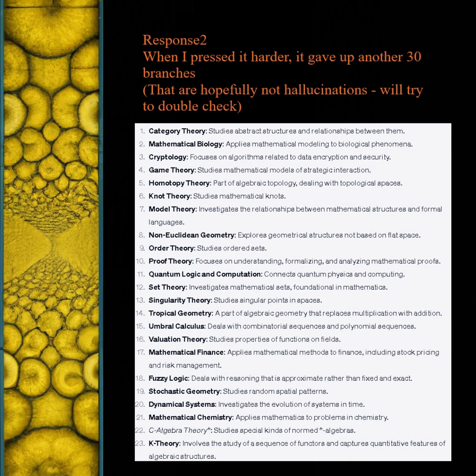Category theory: studies abstract structures and relationships between them. Mathematical biology: applies mathematical modeling to biological phenomena. Cryptology: focuses on algorithms related to data encryption and security. Game theory: studies mathematical models of strategic interaction. Homotopy theory: part of algebraic topology, dealing with topological spaces. Knot theory: studies mathematical knots. Model theory: investigates the relationships between mathematical structures and formal languages. Non-Euclidean geometry: explores geometrical structures not based on flat space. Order theory: studies ordered sets.